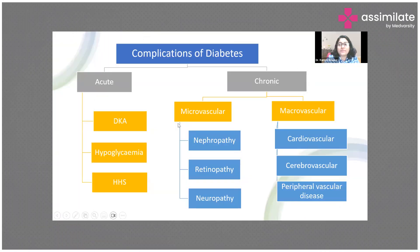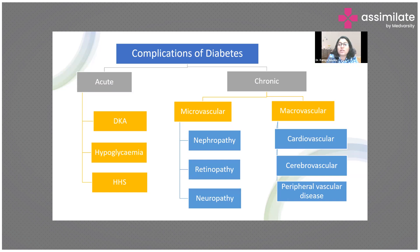Complications of diabetes can be divided into acute and chronic complications. Acute complications include diabetic ketoacidosis, hyperglycemic hyperosmotic state, and hypoglycemia. Chronic complications are divided into macrovascular and microvascular. Microvascular complications include nephropathy, retinopathy, and neuropathies. Macrovascular complications include cardiovascular, cerebrovascular, or peripheral vascular diseases.